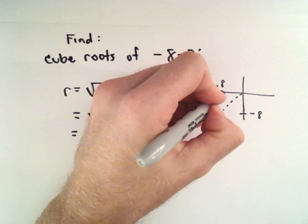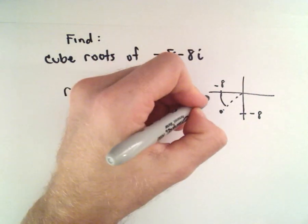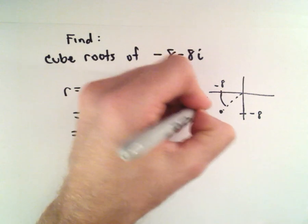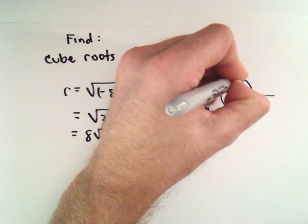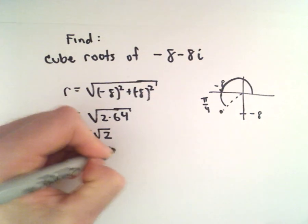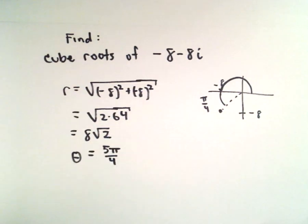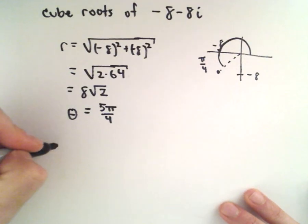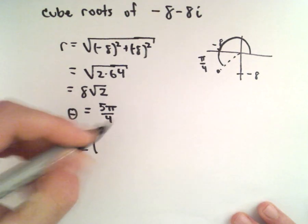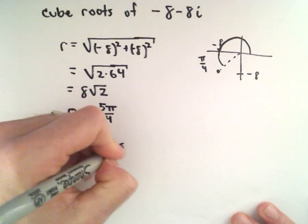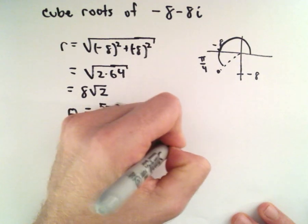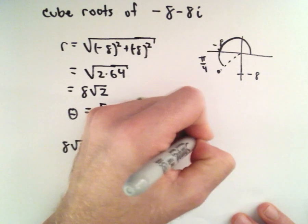The angle between the negative x-axis and the dotted line here will be 45 degrees or pi over 4. So if we add pi to that, we can use theta equals 5 pi over 4. So in trigonometric form our number will look like 8 times root 2 multiplied by cosine of 5 pi over 4 plus i times sine of 5 pi over 4.